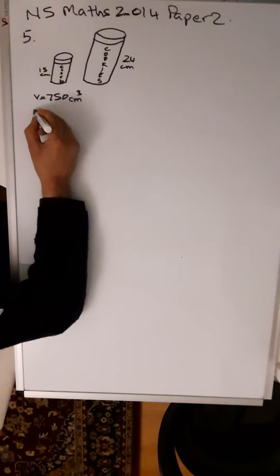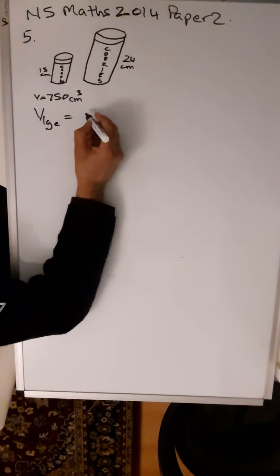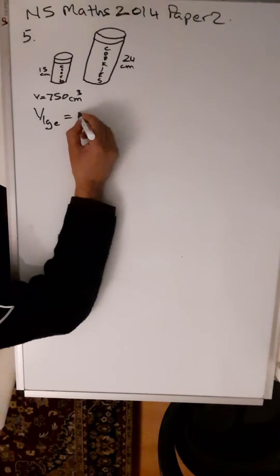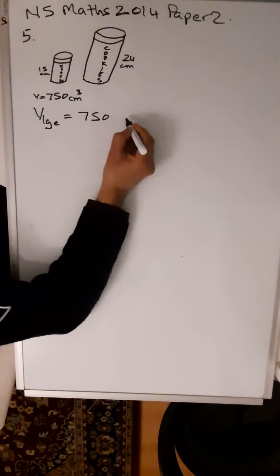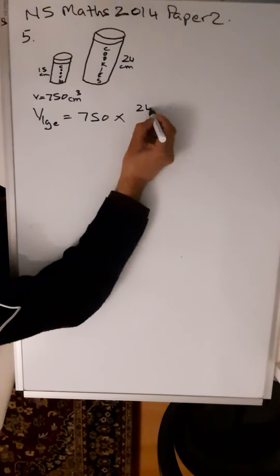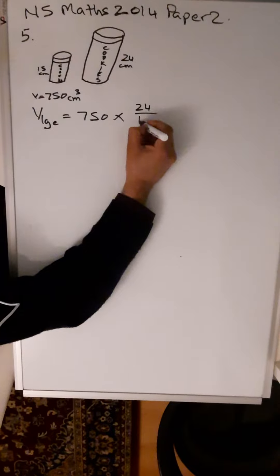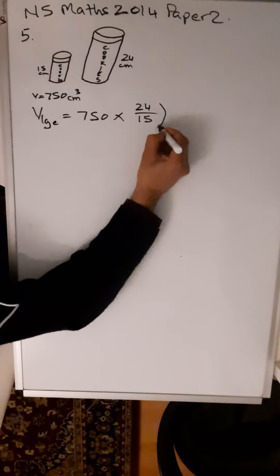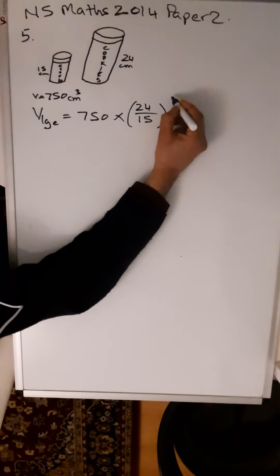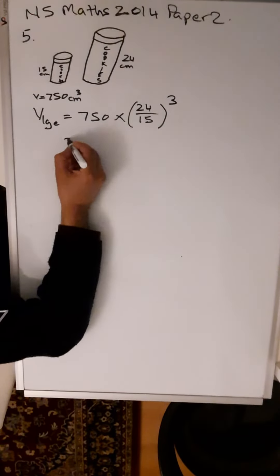Volume of the larger jar is volume of the smaller jar, which is given, multiplied by the ratio of the heights. Because you're looking for the volume of a larger jar, you put the larger height at the top and smaller height in the denominator. And because it's a volume, you're going to cube it. Volume is three-dimensional.